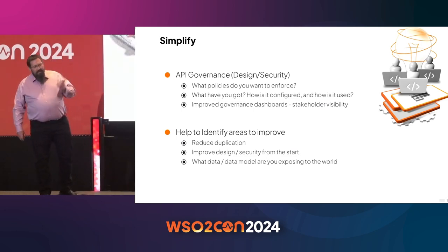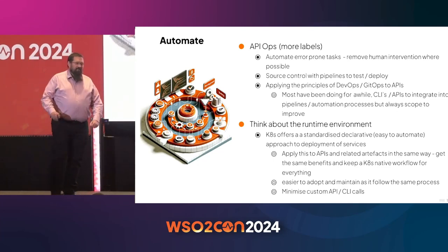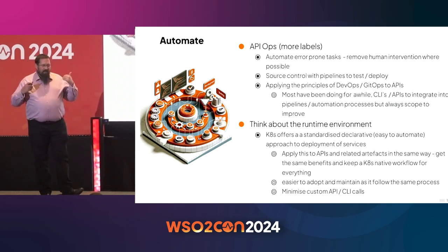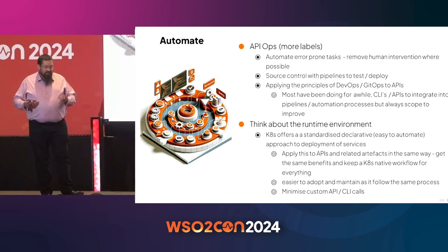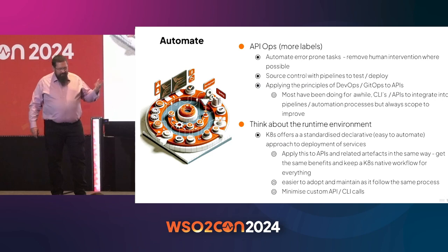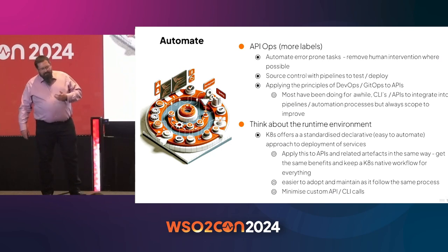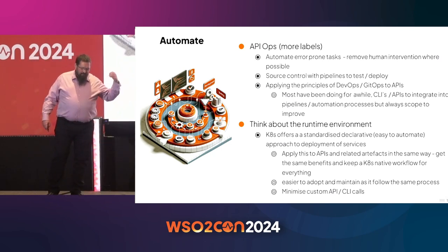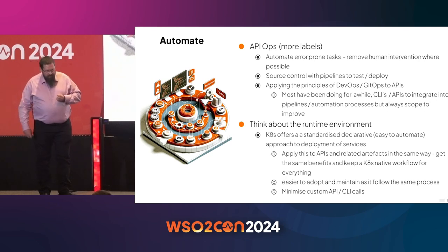Automation is key. AIOps is the latest label — I love labels — but ultimately this is just applying core DevOps principles to APIs as well. You want to automate those error-prone tasks, remove human intervention where it's not necessary, and deliver this with full source control pipelines to test, deploy, et cetera. You've got a lot of those capabilities now with the product, with the CLI and the APIs we've integrated to help integrate your API deployment and testing within the pipeline. But we're looking to always improve that scope, make it a lot easier to manage and control those APIs.